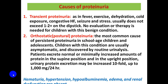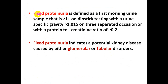The third and most important type is fixed proteinuria, defined as a first morning urine sample equal to or more than 1+ on dipstick with a urine specific gravity of more than 1.015 on three separate occasions, or a protein-to-creatinine ratio of more than or equal to 0.2. Fixed proteinuria indicates potential kidney disease and is caused by glomerular disease or tubular disorders.